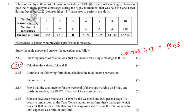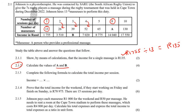Next, calculate the values of A and B. Looking at the table, you can see the relationship: if there is one session, there are 13 masseuses. Each masseuse does one massage per session, so the number of massages equals the number of sessions multiplied by 13. So A equals 8 multiplied by 13, which gives 104.